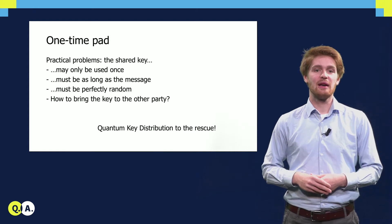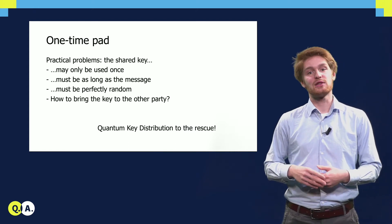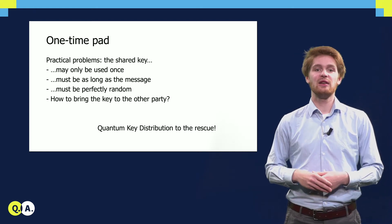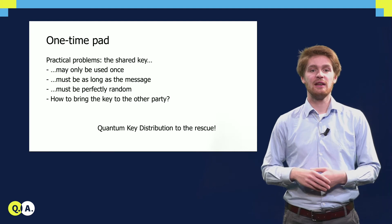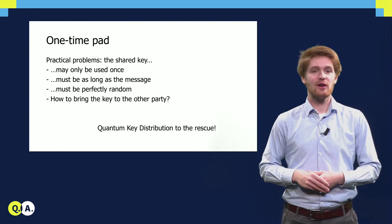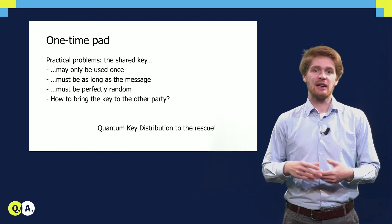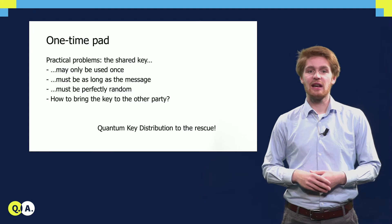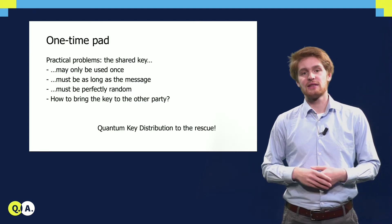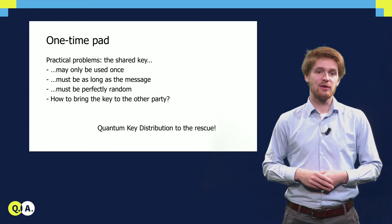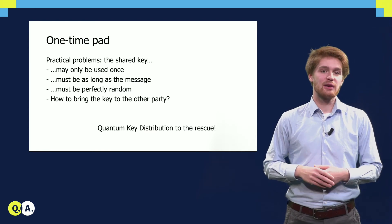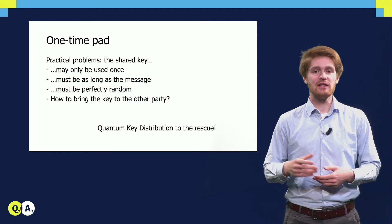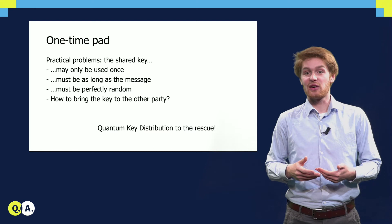First, we have just seen that it may only be used once if you want security to be guaranteed. So every time you would want to send a private message to a friend, you need to establish a fresh, secret key. Second, the key must be as long as the message itself. This can become impractical if you want to watch a movie online, which quickly reaches to a gigabyte of data. And then, in practice, perfect randomness is hard to produce. And maybe most importantly, how do you bring the key to the other party? You don't want to go to the physical location of your bank every time you want to transfer money online.